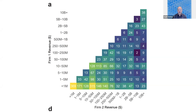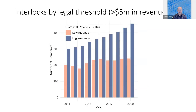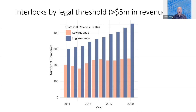All of these interlocks are at least presumptively illegal because these companies are competing with each other. Furthermore, we find that interlocks are actually more common among high-revenue rather than low-revenue companies. The high-revenue companies have both a larger number of interlocks, and that number is increasing among the companies subject to the current revenue thresholds.